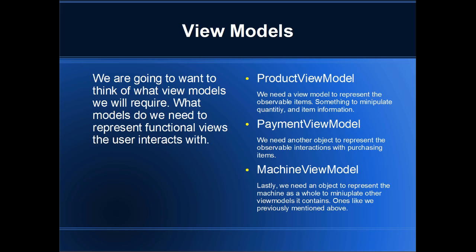Our product view model — if you think of a vending machine, you have your rows, and in your rows it has a collection of specific items. So the first row may be all of regular cola, the second row may be all of diet cola. Our product view model is essentially going to represent these views.